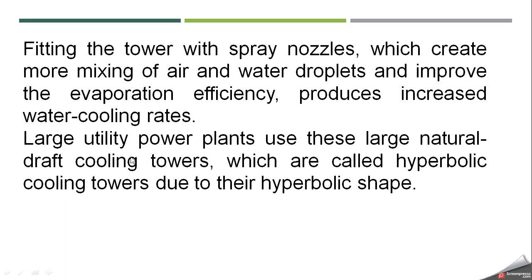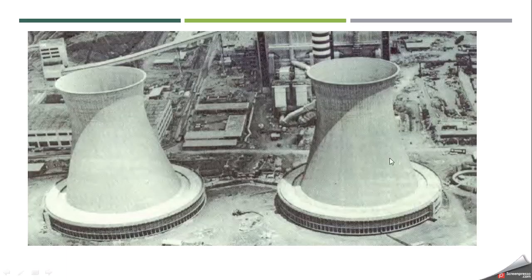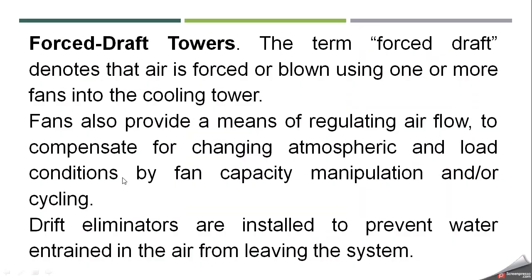Large utility power plants typically use large natural draft cooling towers, which are also called hyperbolic cooling towers due to their hyperbolic shape. Air enters from windows at the bottom of the tower and exits at the top. These pictures show examples of hyperbolic natural draft cooling towers.